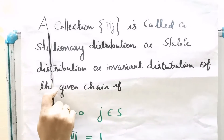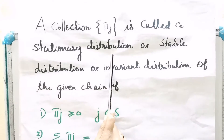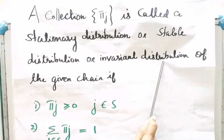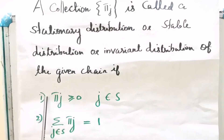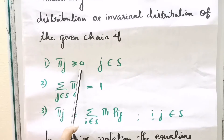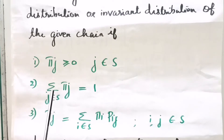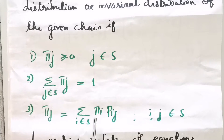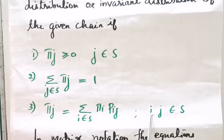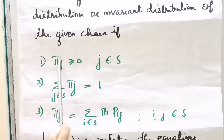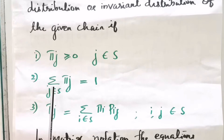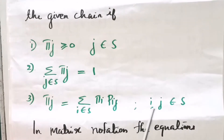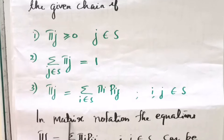A collection sequence {πj} is called a stationary distribution, stable distribution, or invariant distribution of the given chain, if: first, πj ≥ 0 for all j in S; second, Σ πj = 1; and third, πj = Σ (over i in S) πi × Pij, for all i and j in S.